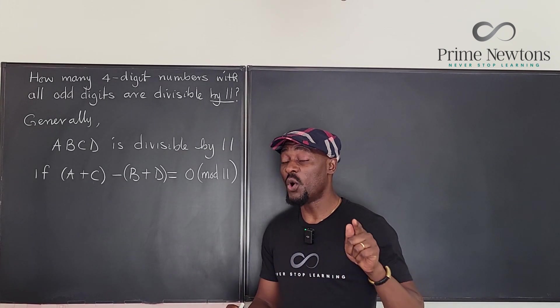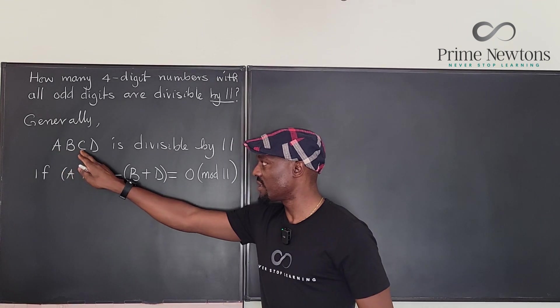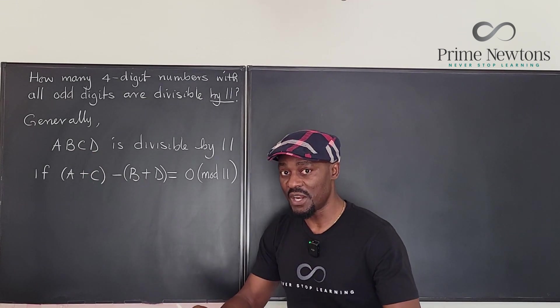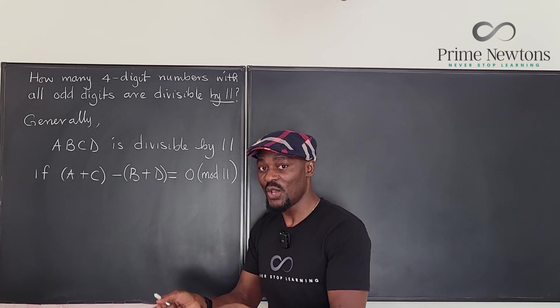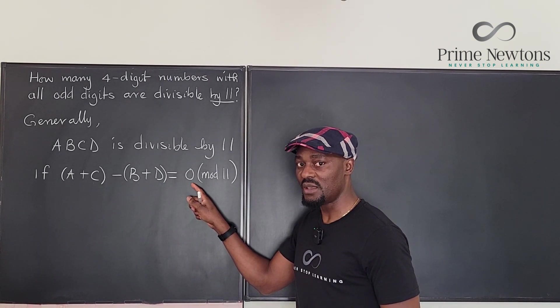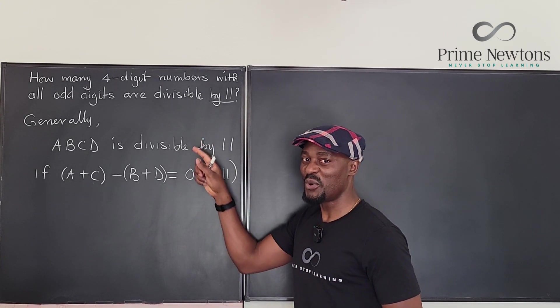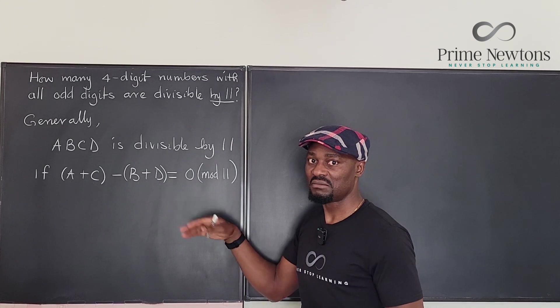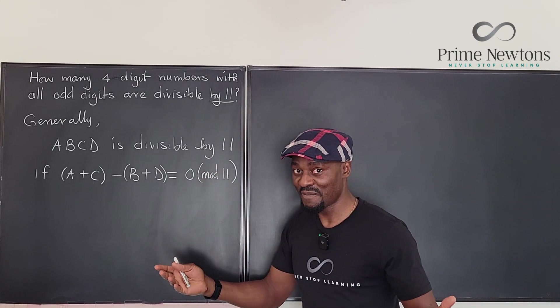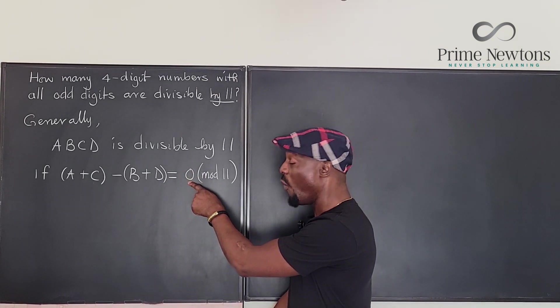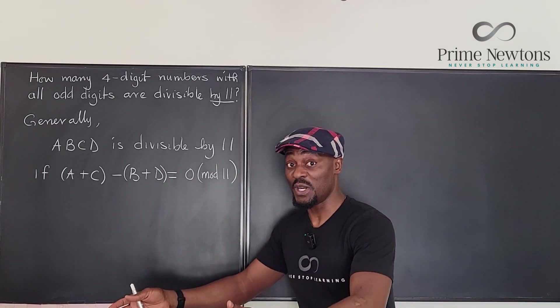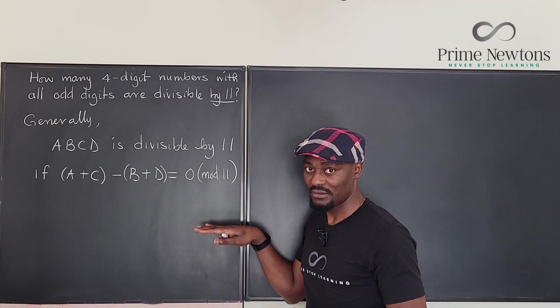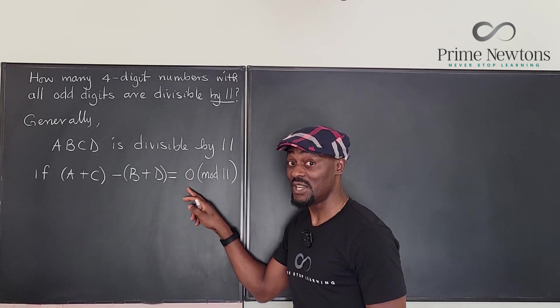Because the numbers we're talking about have only odd digits, any time you do A plus C, this is odd plus odd, you're going to get an even number. Any time you do B plus D, you're going to get an even number. And the difference between two even numbers has to be even. So all our answers on the right-hand side will be either 0 or 22 or 44. But we know we can't get those big numbers because we're just doing four digits. The sum of two single digits cannot be more than 18 if they are odd numbers. So this is the only option we're going to get. It's always going to be 0.